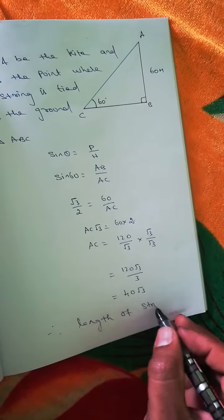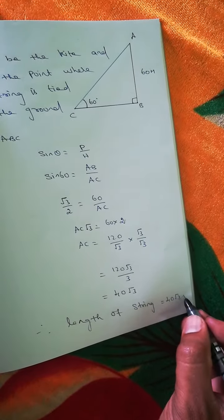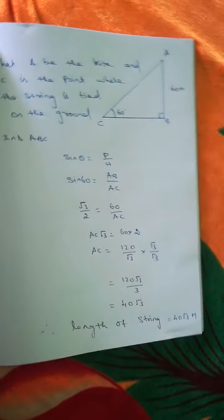Therefore, the length of string equals 40 root 3 meters.